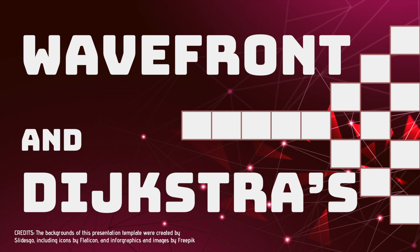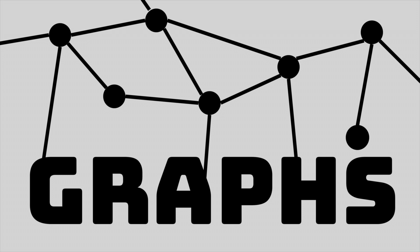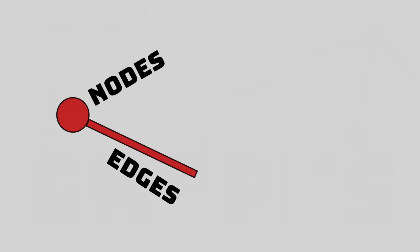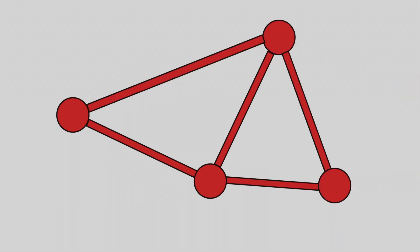In order to understand pathfinding, you first have to understand what I mean by graph. A graph is something that is made up of nodes and edges. Edges have two nodes, and nodes can have as many edges as you want. This makes a graph.